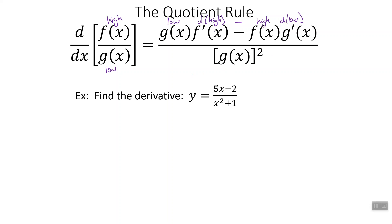Low D high minus high D low, square the bottom, and away we go. That's our phrase to help us remember the quotient rule. I always did bottom times derivative of the top minus the top times derivative of the bottom over the bottom squared, but low D high, high D low, square the bottom, and away we go — makes a lot more sense, a lot easier.